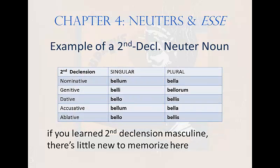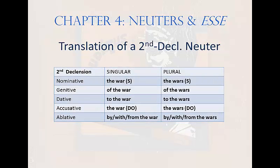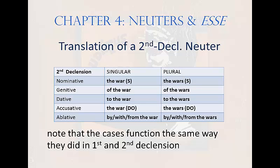Here's an example of a second declension neuter noun: bellum, meaning war. Let's decline it together: bellum, belli, bello, bellum, bello; bella, bellorum, bellis, bella, bellis. Note that the cases function the same way they did in first and second declension, so there's no reason to recite the translations here.